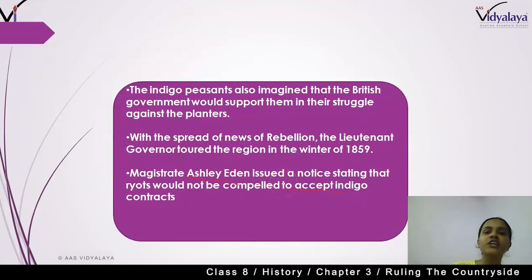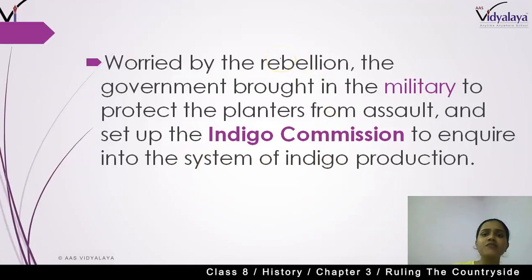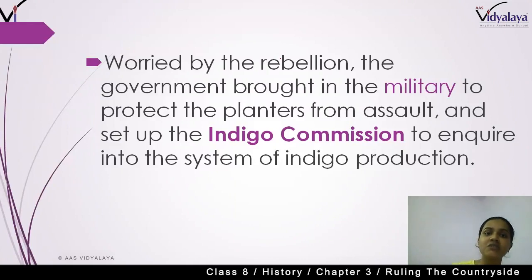The indigo peasants thought the British government was sympathetic to them. However, worried by the rebellion, the government brought in the military to protect the planters from assault and set up the Indigo Commission to inquire into the system of indigo production. The government called soldiers to protect the planters, and the indigo peasants saw that the government was actually supporting the planters.